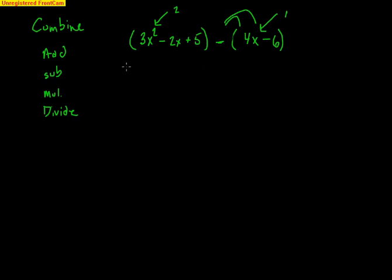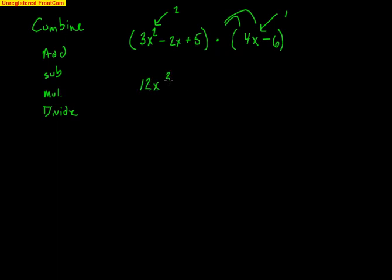We could also multiply the functions together. When we multiply, it's just repeated distribution. So it'd be 3x squared times 4x — that's 12x to the third, because x squared times another x gives x cubed — and we'd get a minus 18x squared.